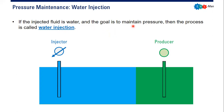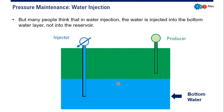So now we have two concepts: water flood, whose main goal is to improve oil recovery, and water injection, whose main goal is to maintain the reservoir pressure. The schematic is the same — we have an injector and a producer. We inject water into the reservoir to maintain reservoir pressure, and ultimately this will be impactful for production, giving us higher oil recovery.